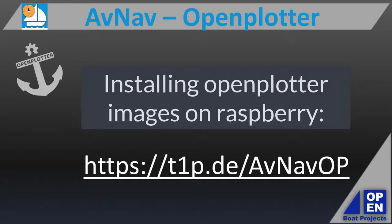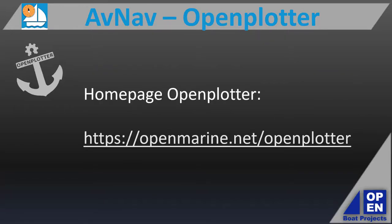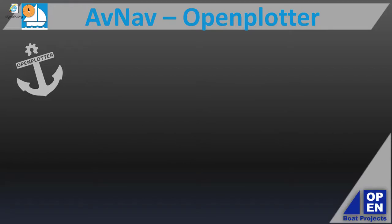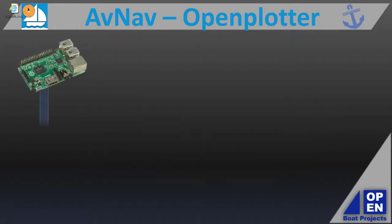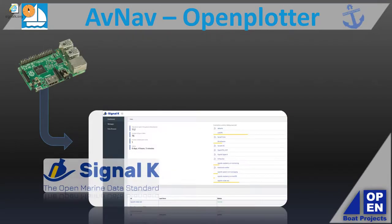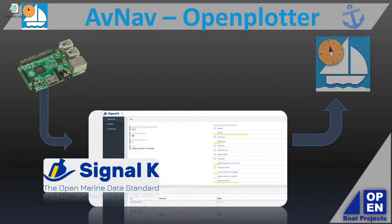If OpenPlotter sparked some interest, their website is linked below. OpenPlotter's data backbone is the Signal-K server. It's less complicated than it sounds, as the installation variant of AvNav for OpenPlotter takes care of the necessary connections between Signal-K and AvNav. The links stated in the video can be found in the video description.